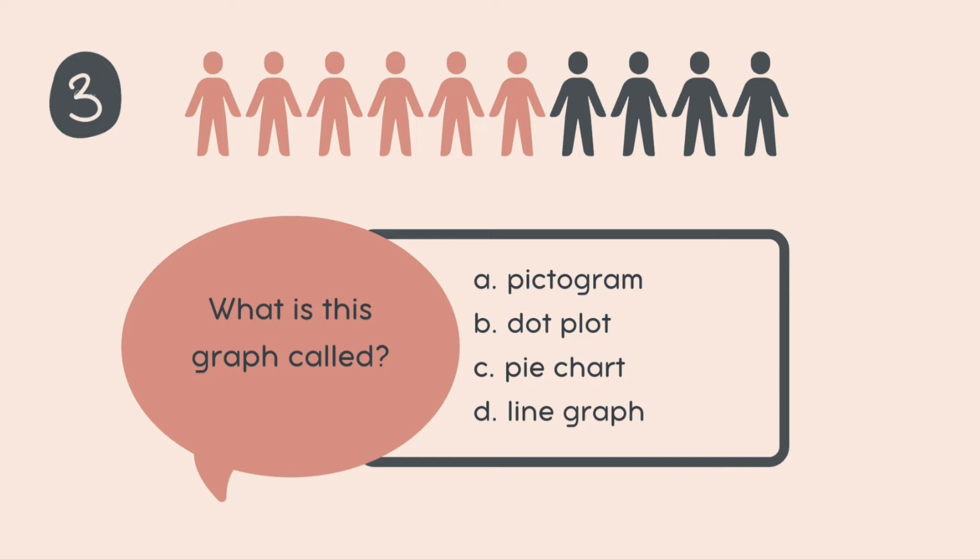What is this? We have a few people arranged. The picture looks like a few people but the people are of different colors. A few of them are brown or orange. What do we call this color? And a few of them are gray. So what is this? What do we call this? A pictogram, a dot plot or a pie chart or a line graph? What is it? I hope you have got your answer. If not, pause the video. And once you have done writing the answer, playback.